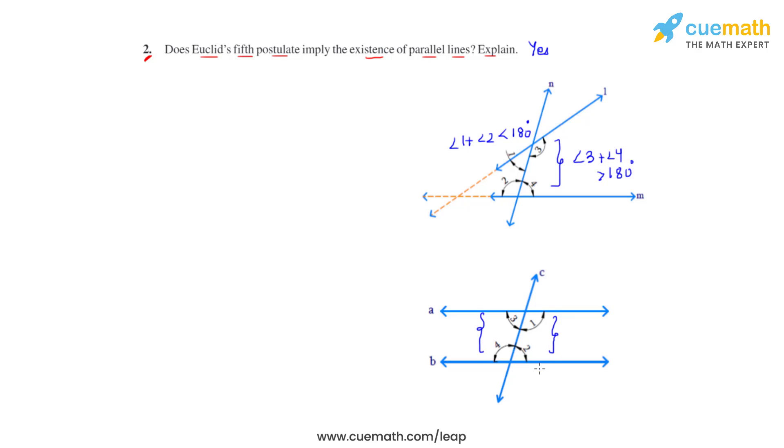In this case, angle 3 plus angle 4 equals 180 degrees, and so does the sum of angle 1 plus angle 2. When the sum of the co-interior angles equals the sum of two right angles, that is 180 degrees.